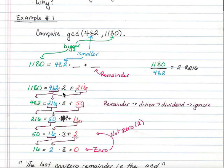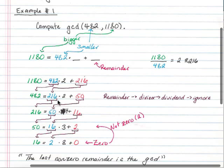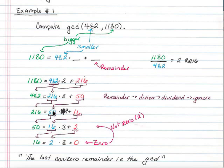So now that we've set up that initial, we can start our scooting over process. We take what's in the blue position here, move it over to the green position, take the remainder, move it over to the blue position, and do the same thing again. 482 divided by 216 is 2 with a remainder of 50. And we do that again, move the blue over to the green, and the remainder over to the blue. And we say that 216 equals 50 times 4 plus 16.